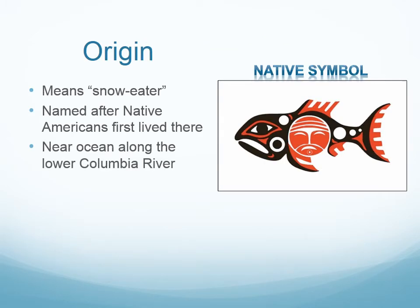Chinook is claimed by popular folk etymology to mean a snow eater, but it's really the name of people in the region where the usage was first derived. The reference to a wind or weather system, simply a "Chinook," originally meant a warming wind from the ocean into the interior regions of the Pacific Northwest of the USA. That's why the Chinook people, the tribe, lived near the ocean along the lower Columbia River.